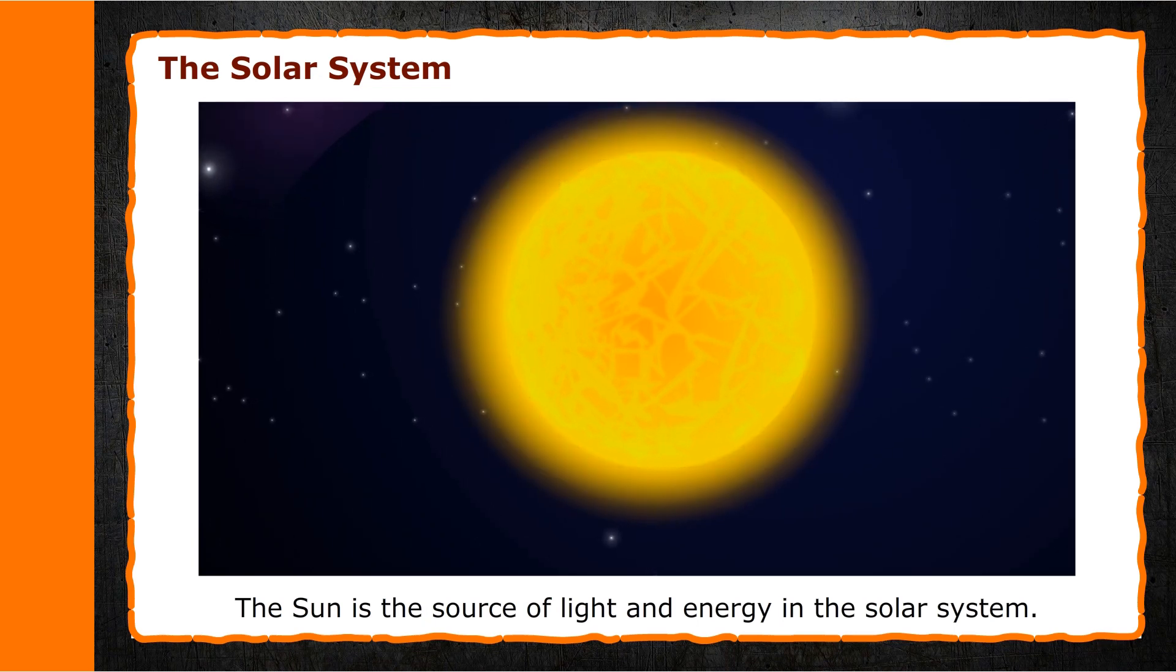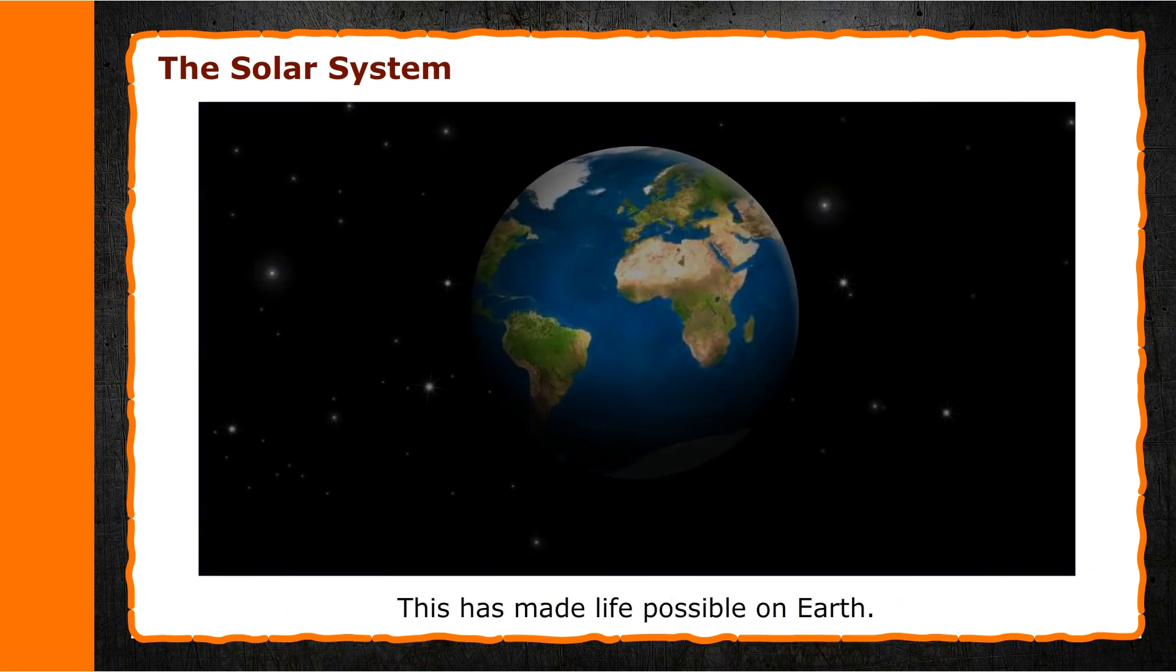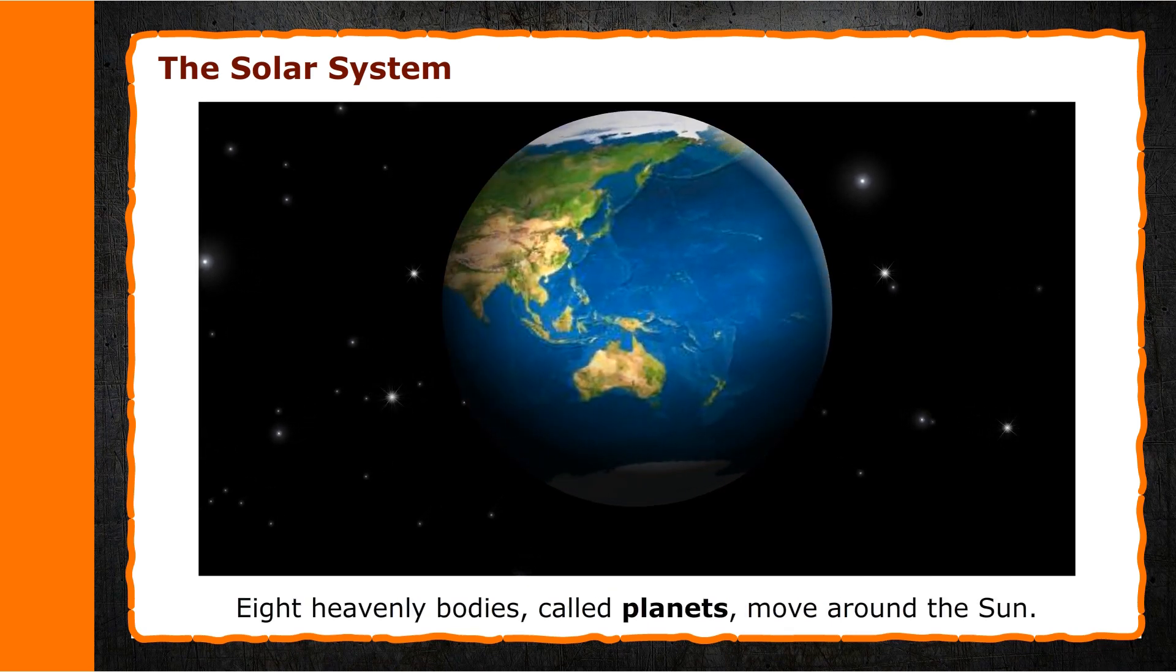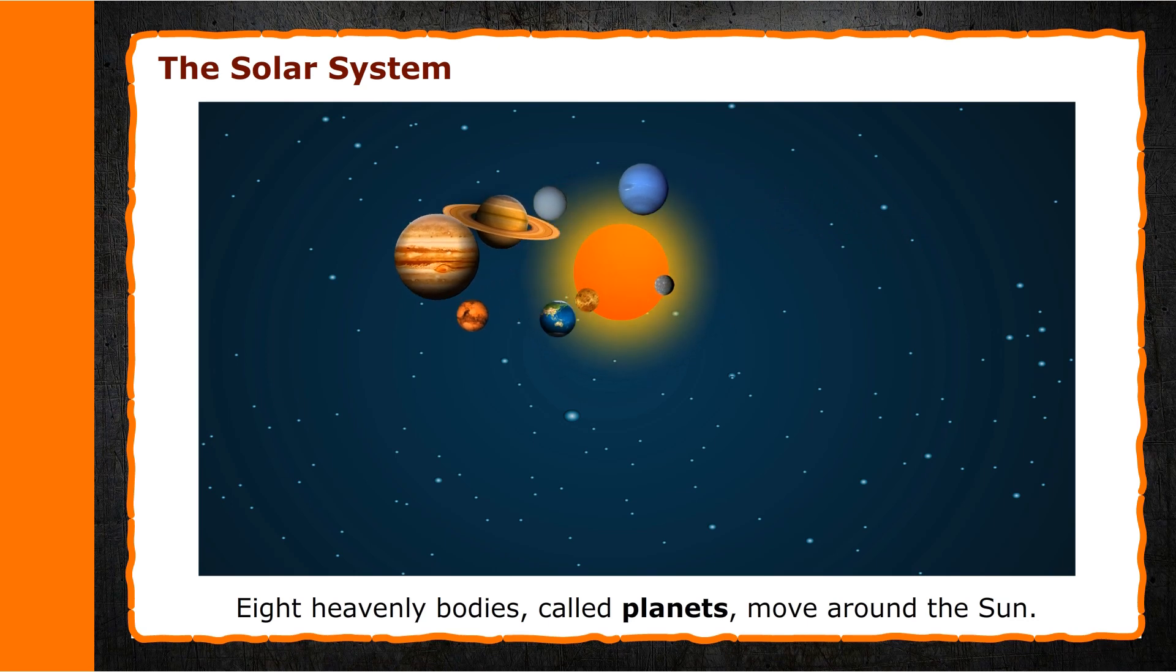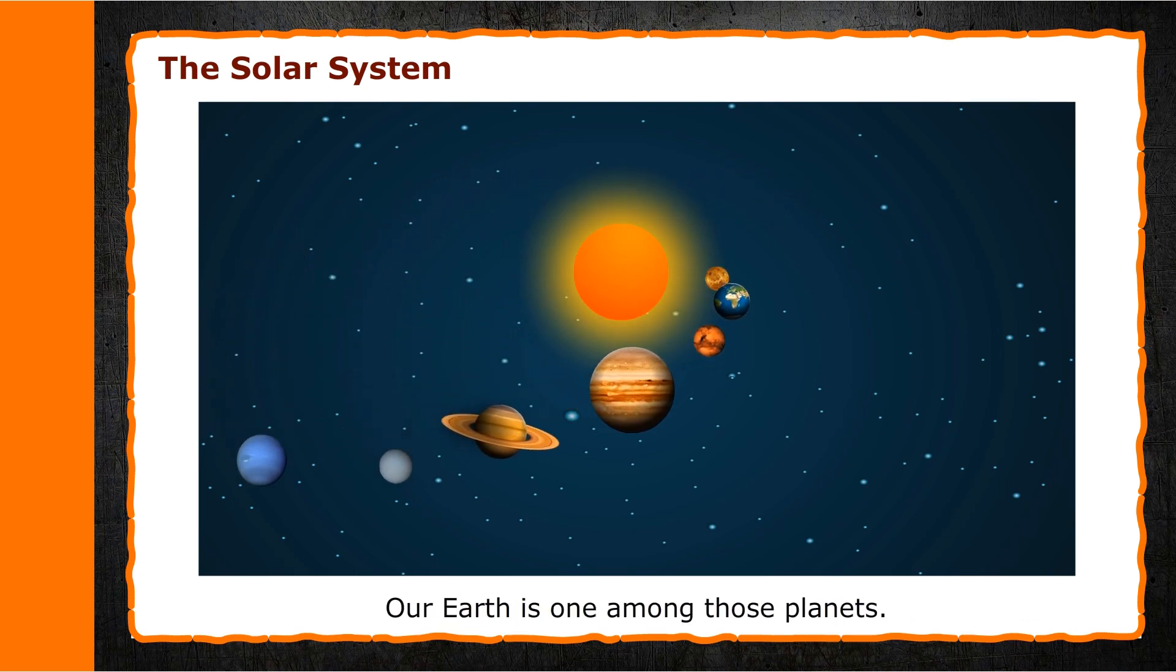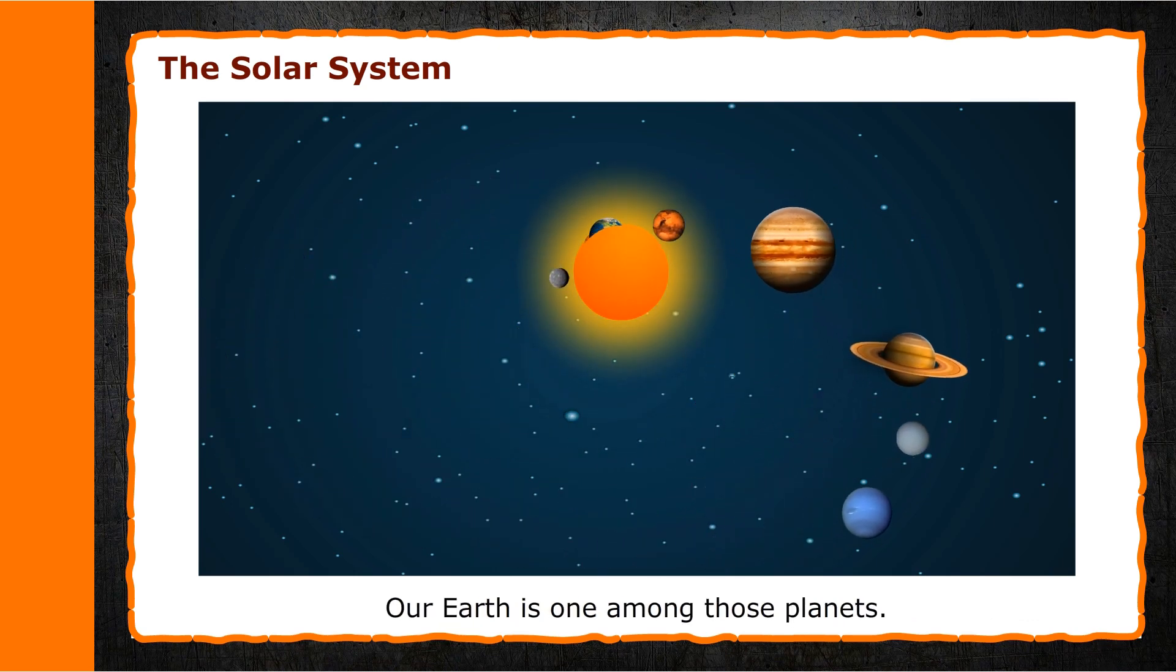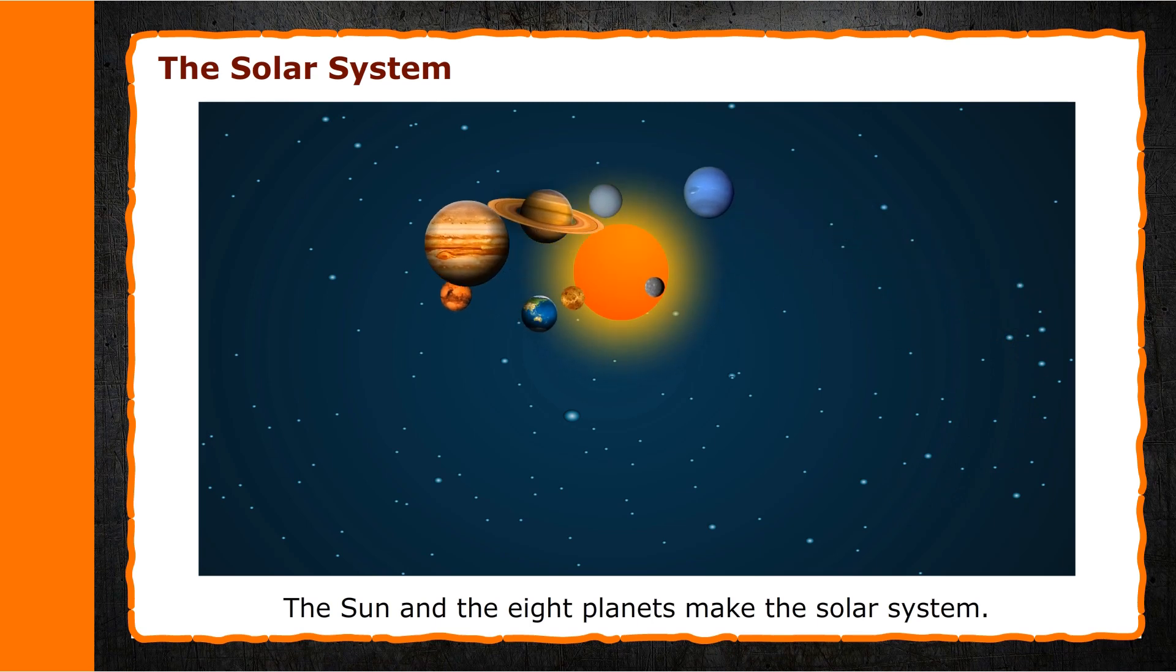Eight heavenly bodies called planets move around the Sun. Our Earth is one among those planets. The Sun and the eight planets make the solar system.